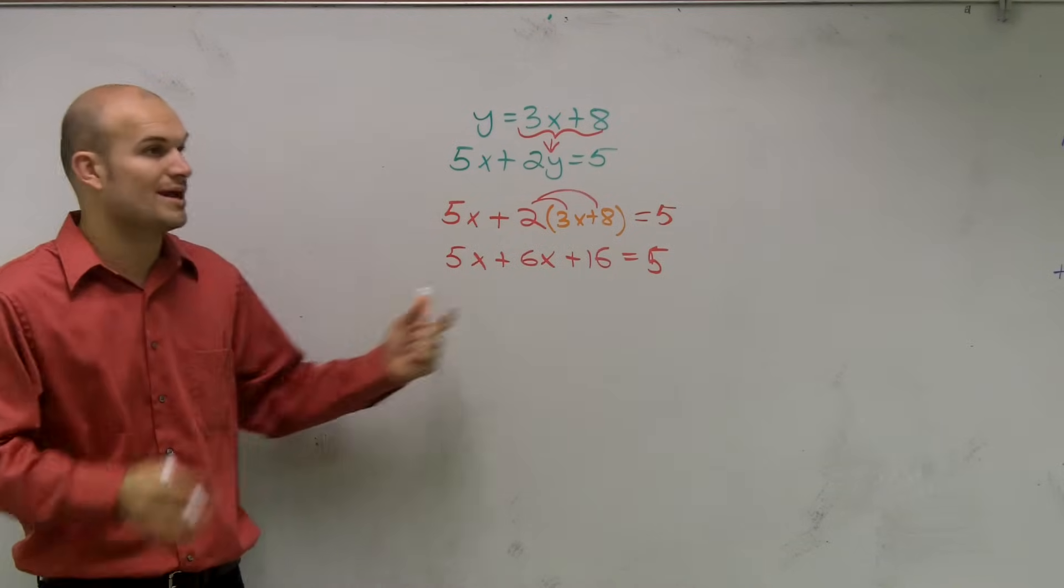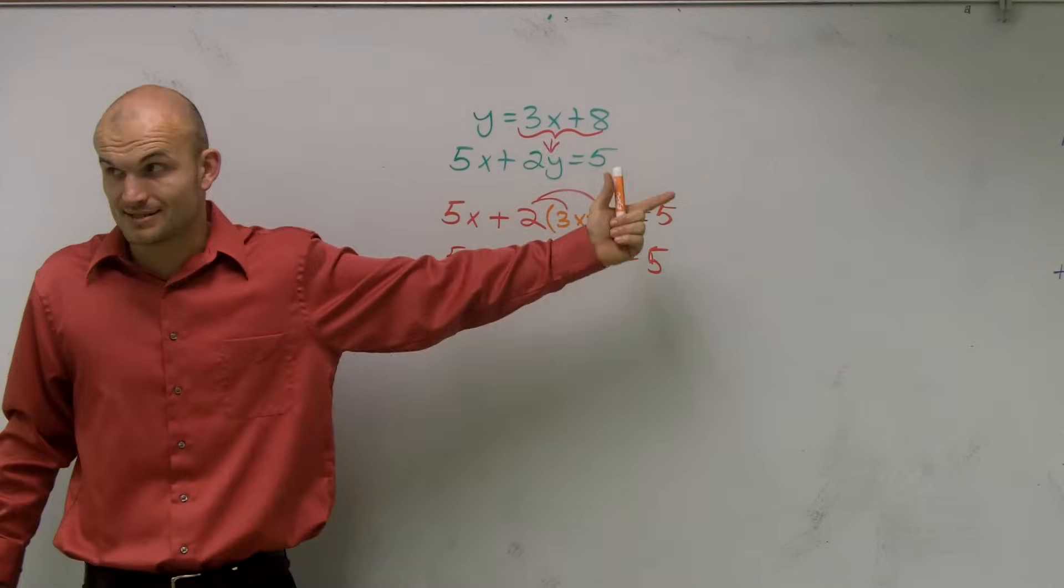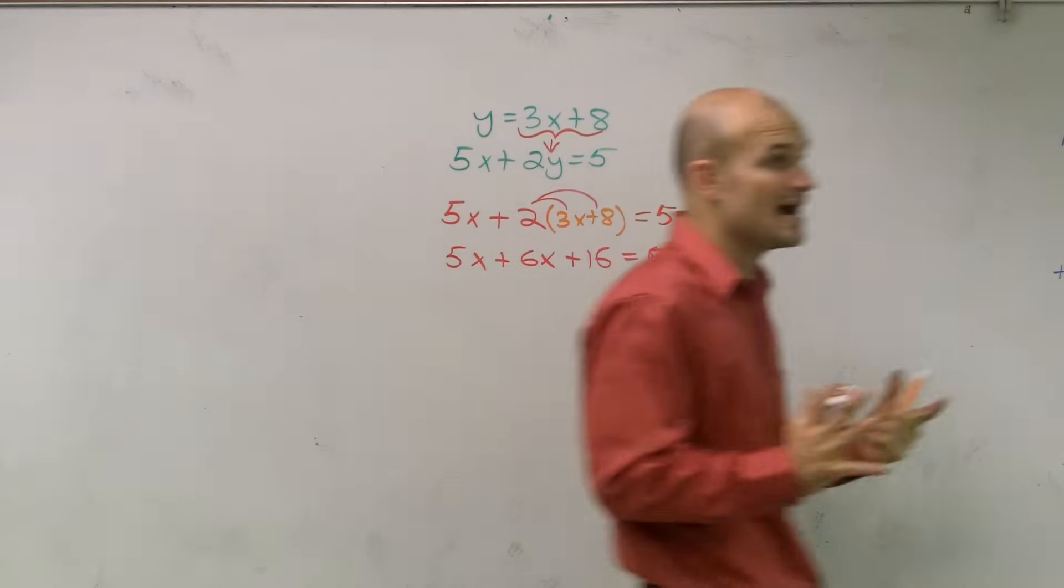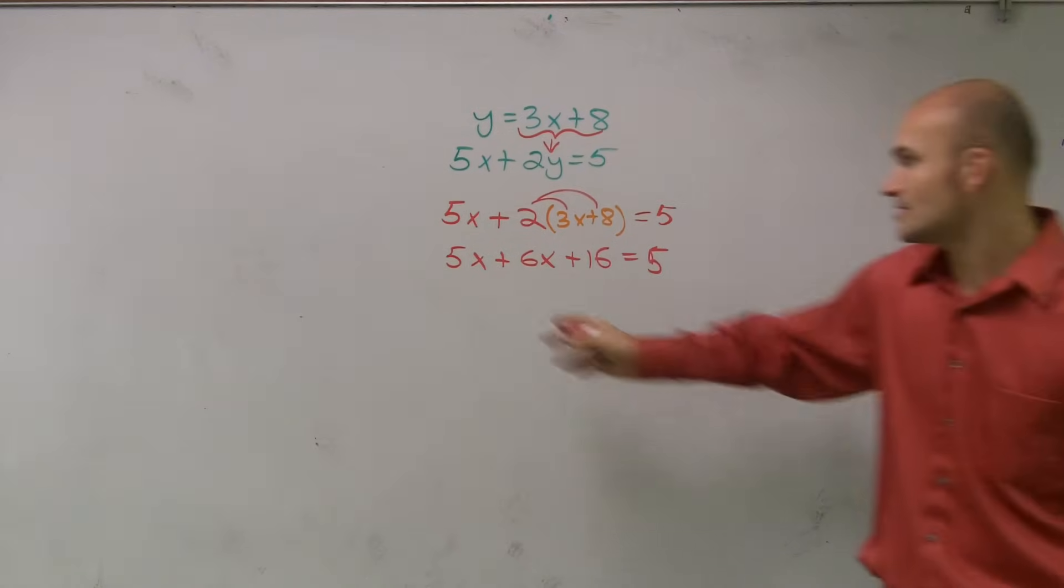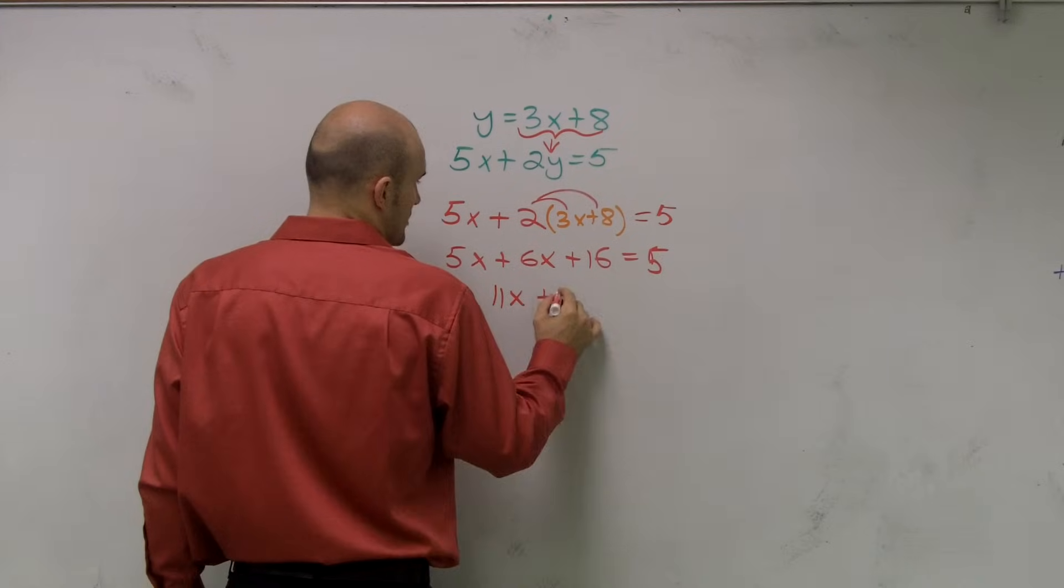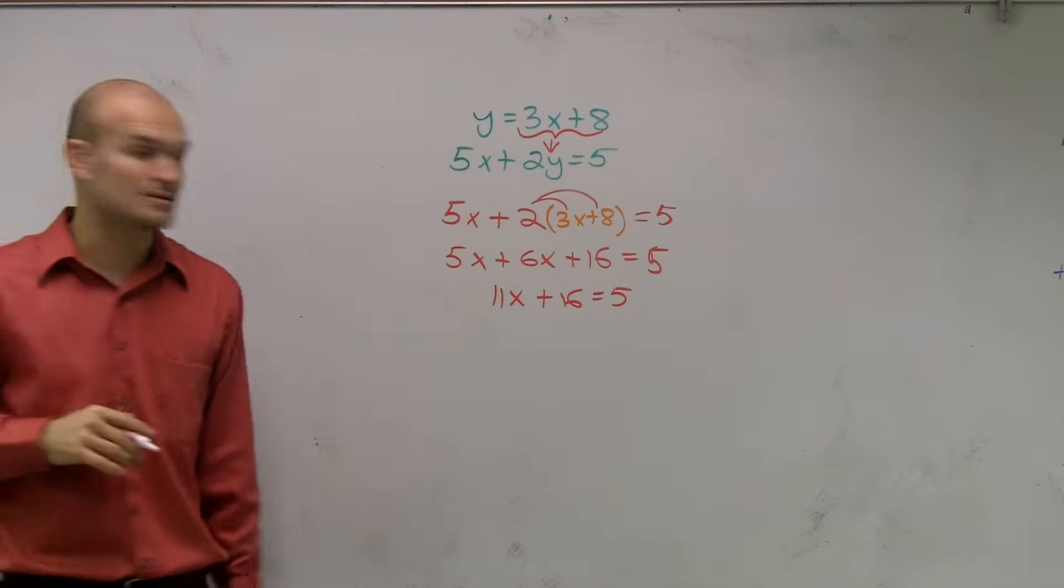The next step, guys, is remember when you have your variable on the same side of your equation, not on opposite sides, you just combine like terms. 5x plus 6x is 11x plus 16 equals 5. Now it's a two step equation.